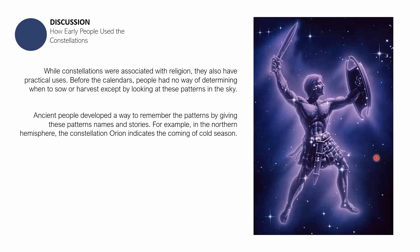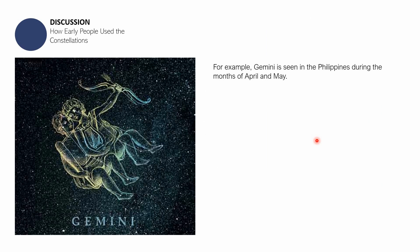For instance, in the northern hemisphere, the constellation Orion indicates the coming of the cold season. When Orion appears on the horizon at night, it means the cold season is approaching. These constellations made it easier for ancient people to recognize and interpret the patterns in the sky.